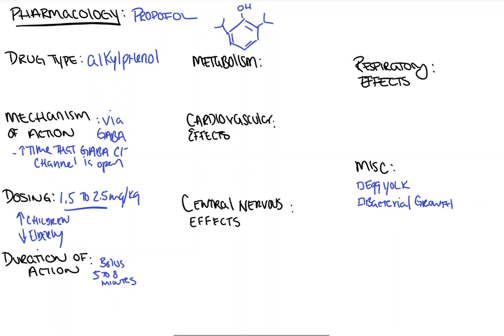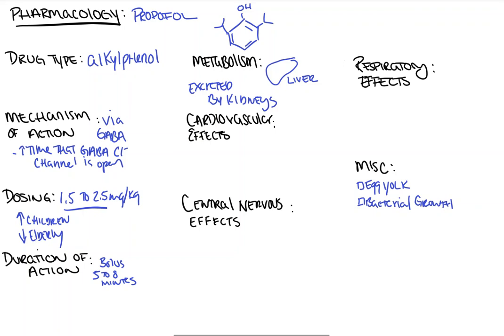For the metabolism: propofol is metabolized by the liver and subsequently excreted by the kidneys. An interesting fact is that the clearance rate is actually higher than the blood flow through the liver, meaning there are other sites of metabolism — one of which is postulated to be the lungs. Also important is that the termination of action, despite high clearance, is due to redistribution from the brain and blood into skeletal muscles and fat tissue — a concept we'll discuss in the three-compartment model video.